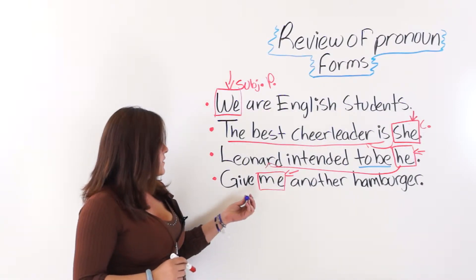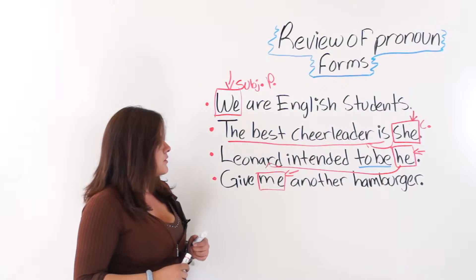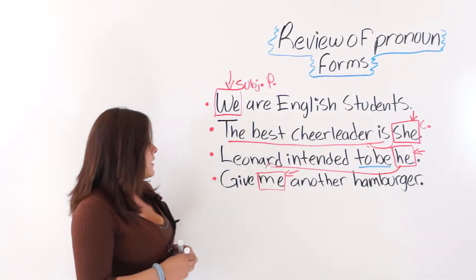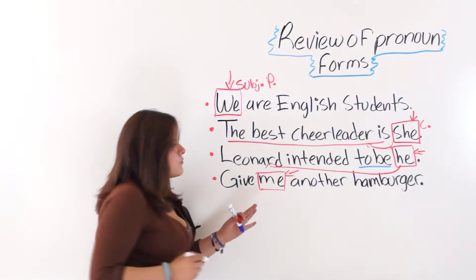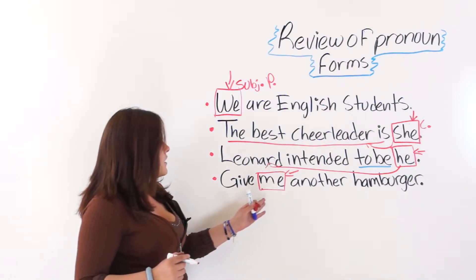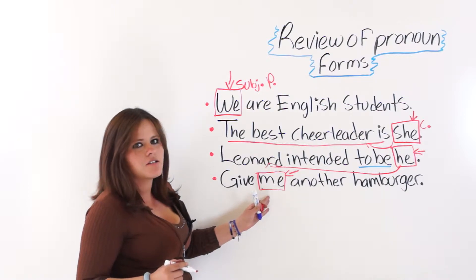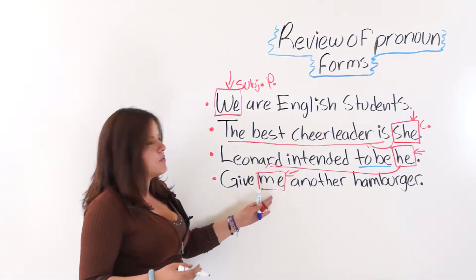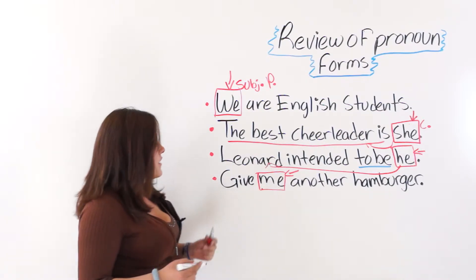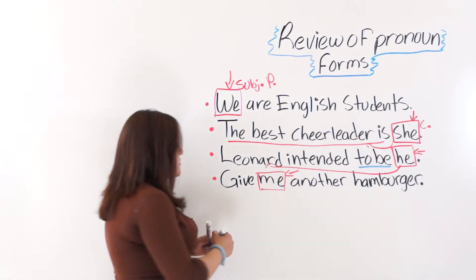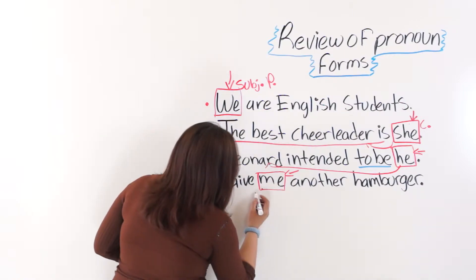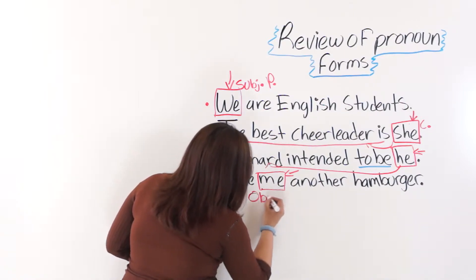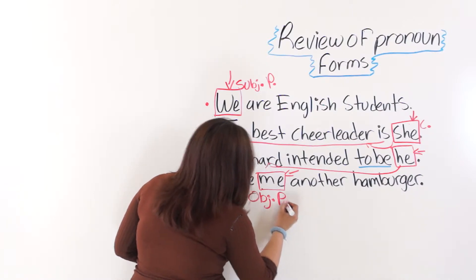And the last one says, give me another hamburger. This is not the object. Hamburger would be acting as the object, and me would be acting as the indirect object. That is why we are using an object pronoun. And this is an objective form pronoun or an object pronoun.